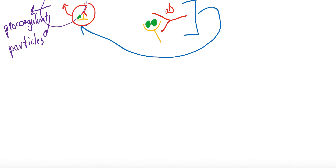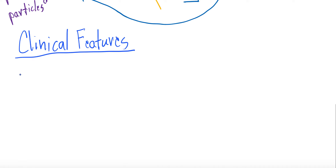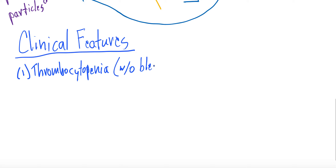Now let's talk about clinical features. This can sound confusing because you essentially have a prothrombotic state but the patient is thrombocytopenic. The first clinical feature is thrombocytopenia — that's usually what triggers concern for HIT — but there is no bleeding in these patients. When the platelet factor 4–heparin–antibody complex activates the platelet and causes the huge procoagulant release, the antibody-bound platelet is then destroyed by the immune system, causing thrombocytopenia — but the procoagulant particles were already released before destruction.